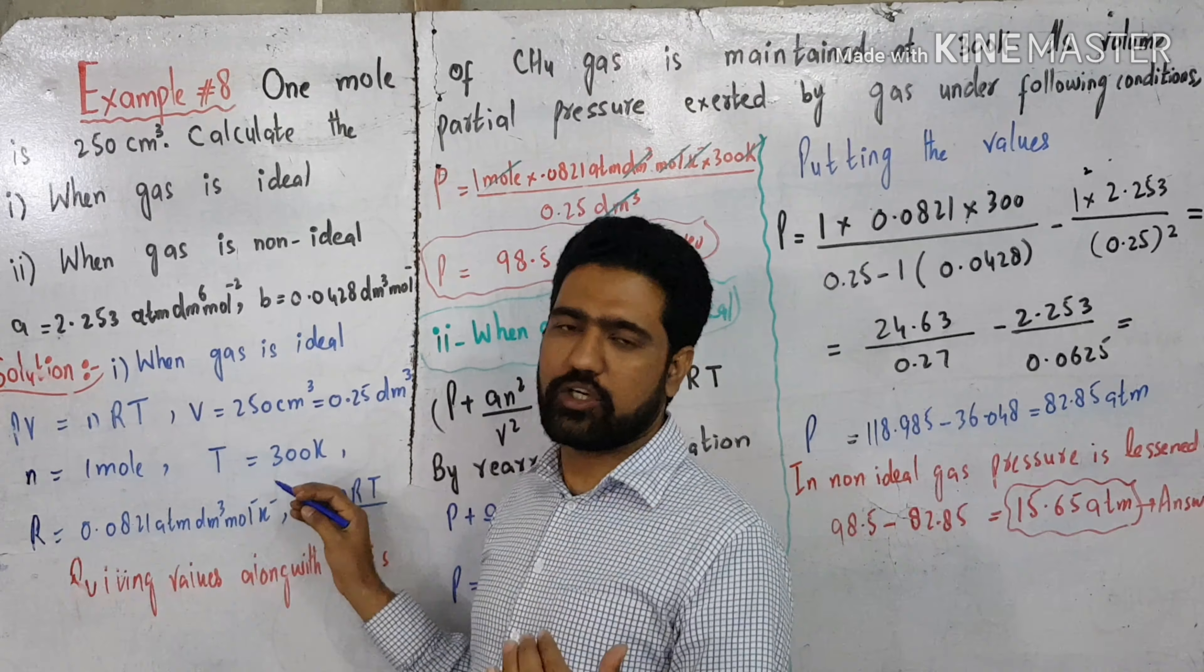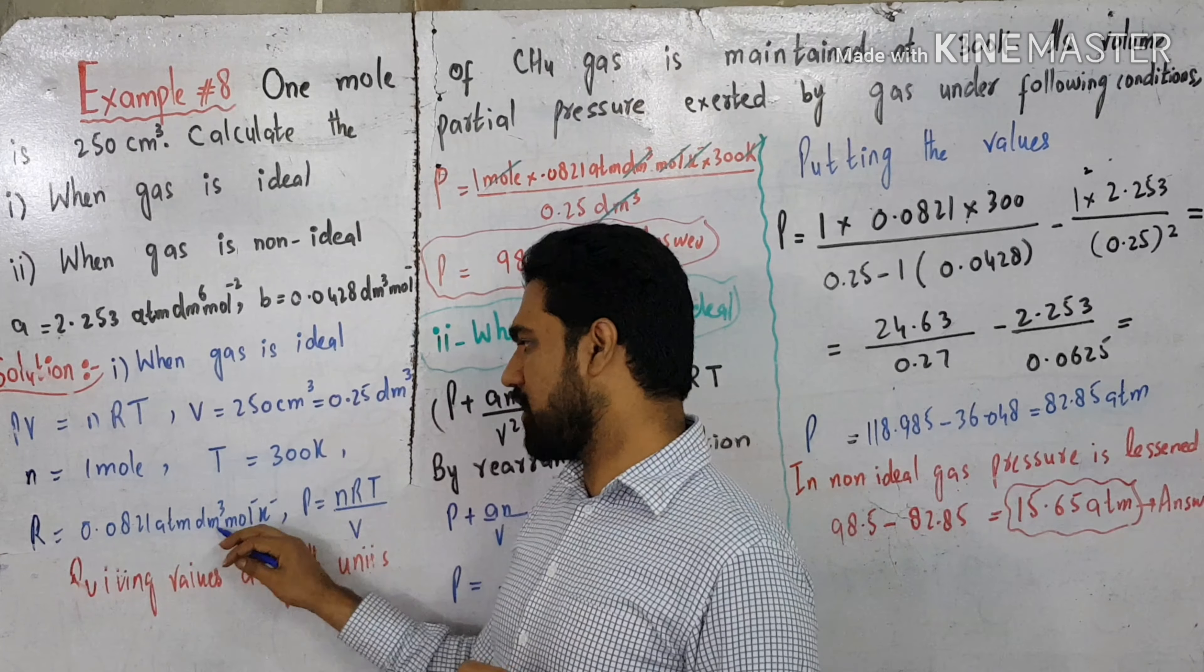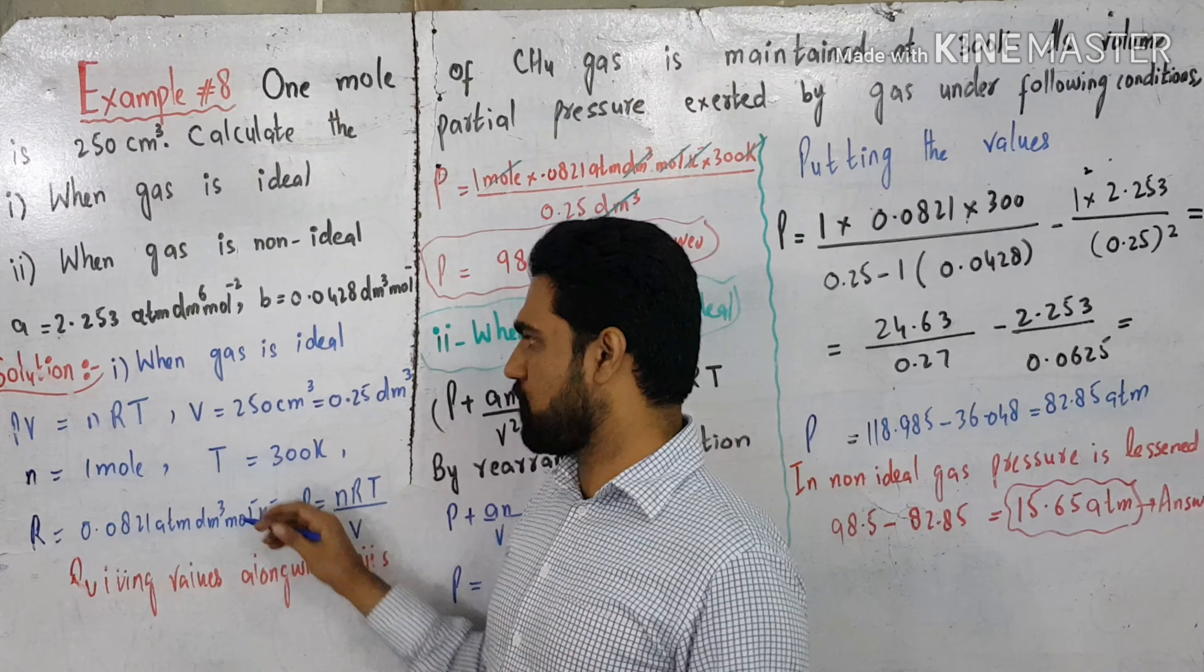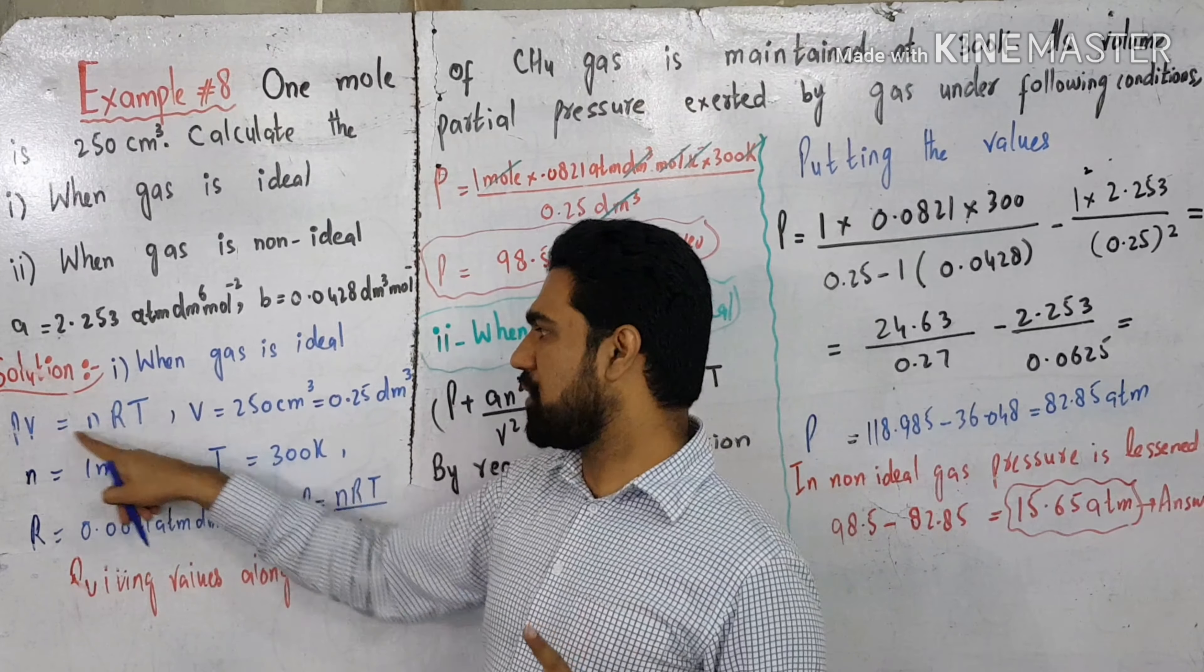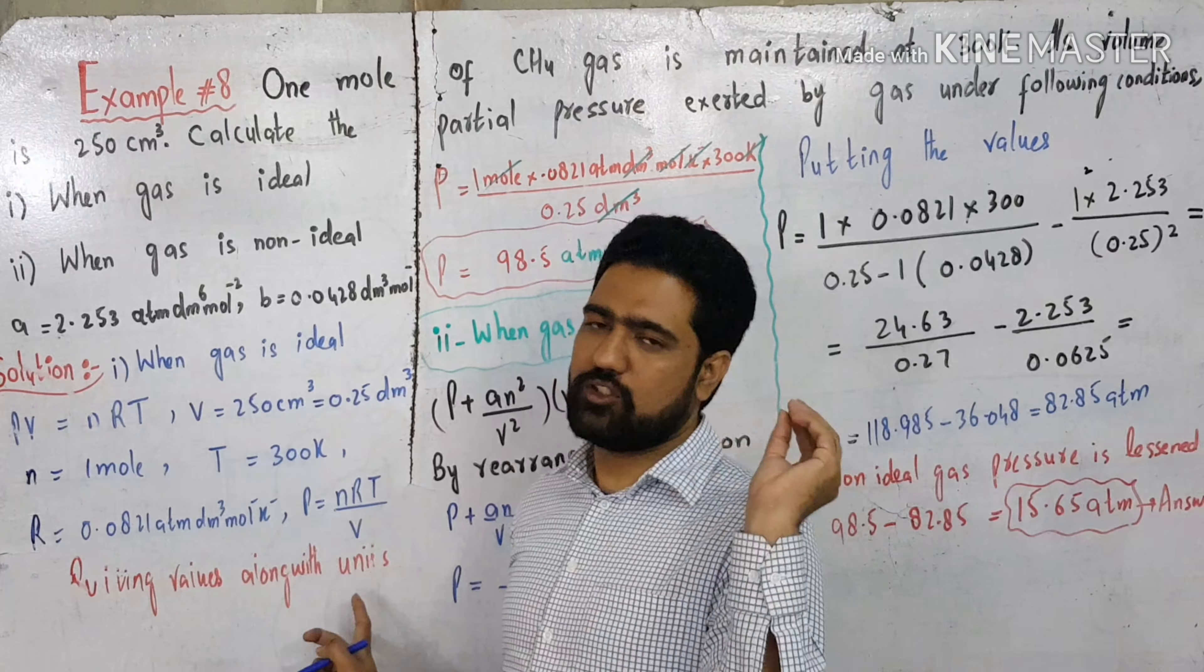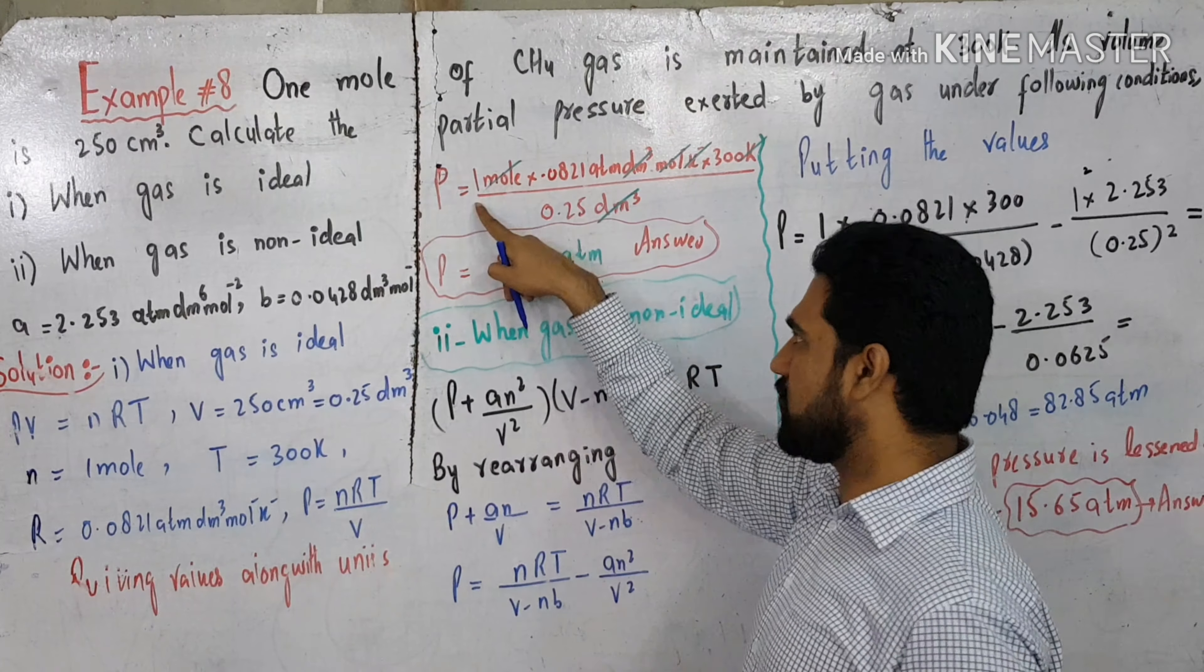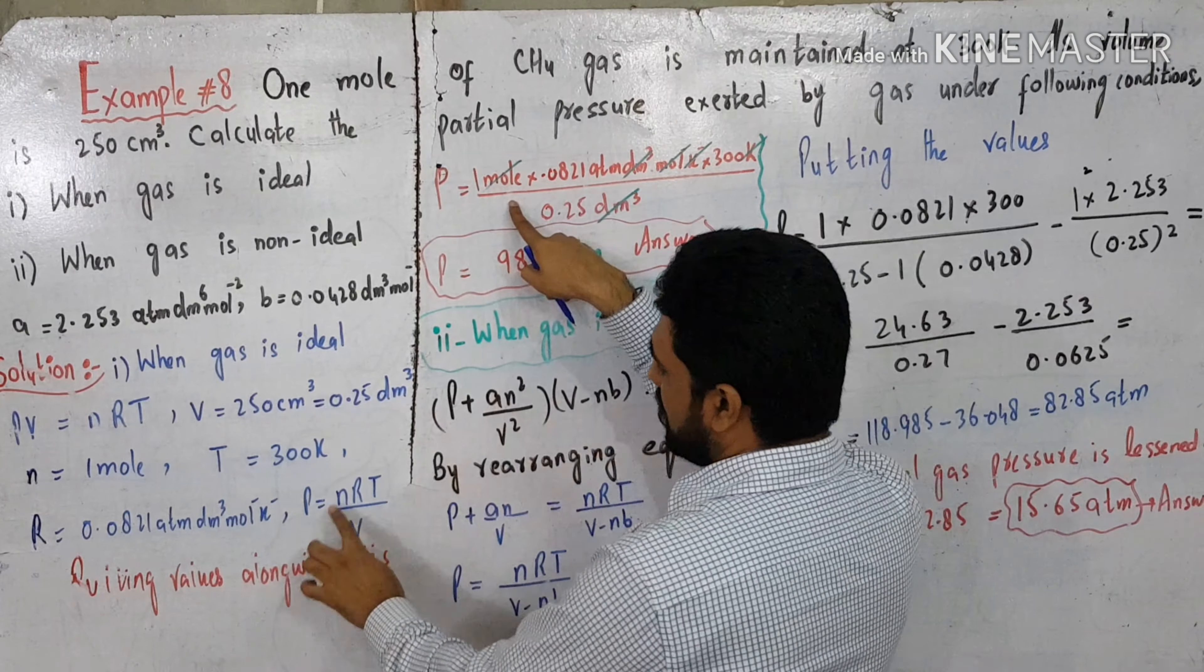Temperature is 300 Kelvin, and ideal gas constant is 0.0821 dm³ per mole per Kelvin. Pressure is equal to nRT over V. Putting values along with units and simplifying.